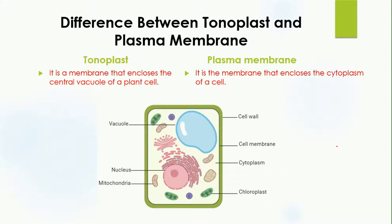Today's lesson is about the difference between tonoplast and plasma membrane. The tonoplast is a membrane that encloses the central vacuole of a plant, while the plasma membrane is a membrane that encloses the cytoplasm of a cell.